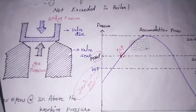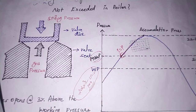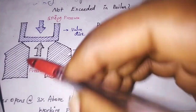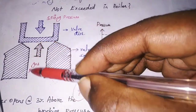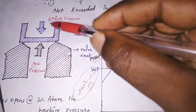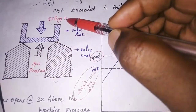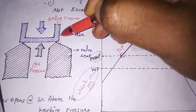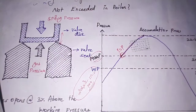Let's consider a simple diagram of a safety valve. We have a valve seat and a valve disc. If the gas pressure is above the spring pressure, the safety valve will open.